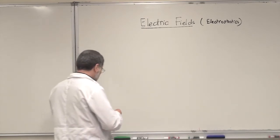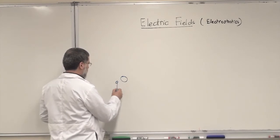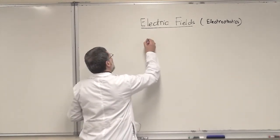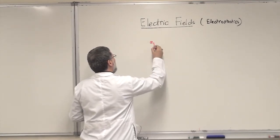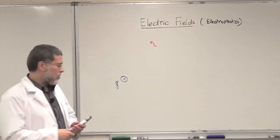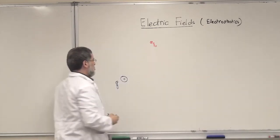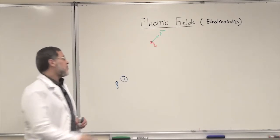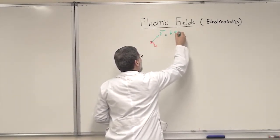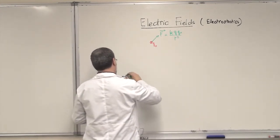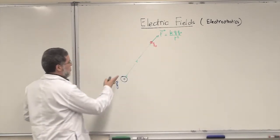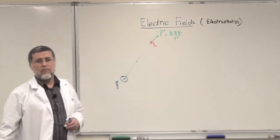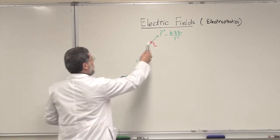Now imagine you have a charge here, of course the charge has symbol Q, and imagine you have a large positive charge and here a small positive charge Q₀ — we call it a test charge. There will be a force on this charge. Because both charges are positive, the force will be repulsion: F on Q₀. That force is given by Coulomb's law: kQQ₀ over R squared, where R is the distance between the two charges. The force is along the line joining the two charges, and because of repulsion the force is in this direction.